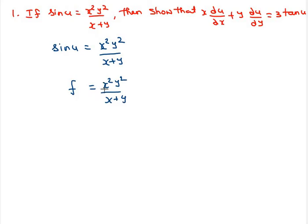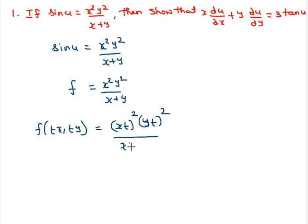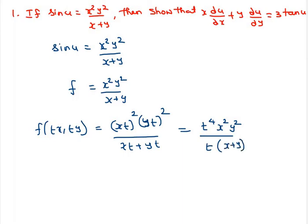Now we check whether this function is homogeneous and find its degree. To check, we find f(tx, ty): replacing x with tx and y with ty, we get (tx)² (ty)² divided by (tx + ty), which equals x² y² times t² times t², which is t⁴, divided by t times (x plus y).